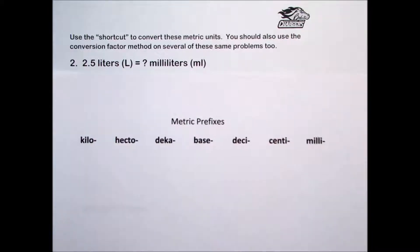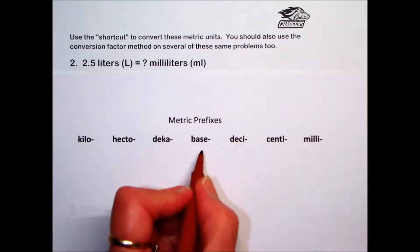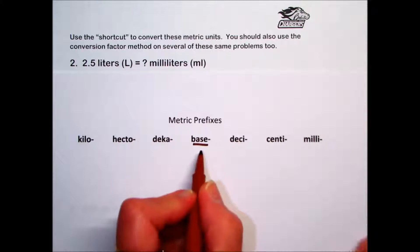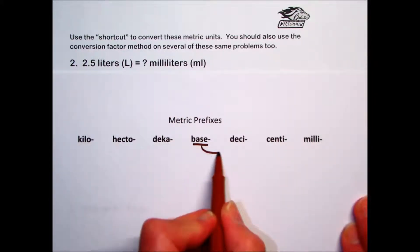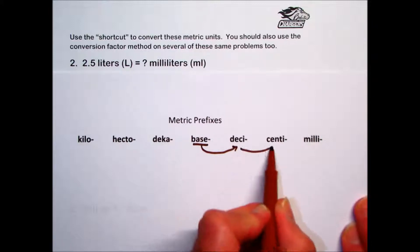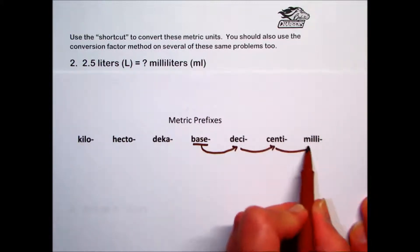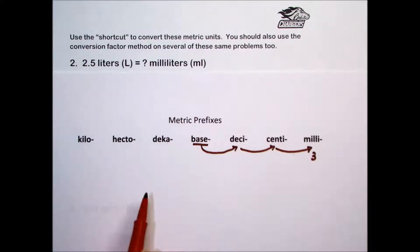If we look at the metric prefixes to use the shortcut method, liters is at the base measurement. We're converting it to milliliters, so we're moving 1, 2, 3 decimal places to the right to convert from liters to milliliters.